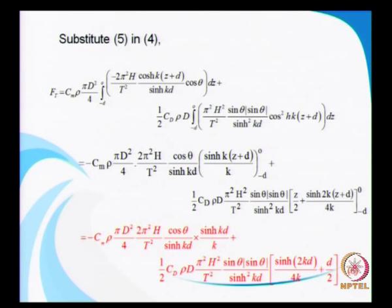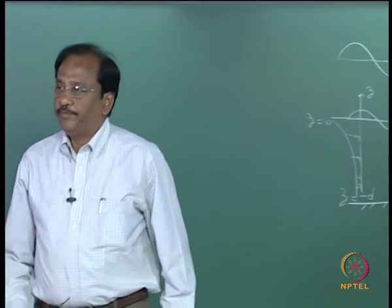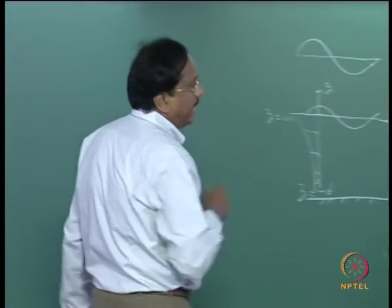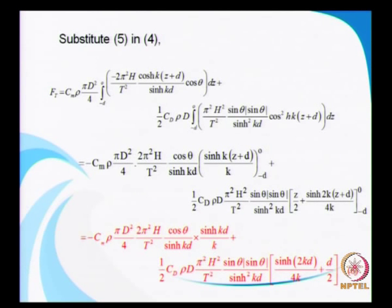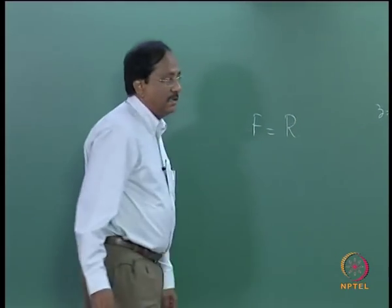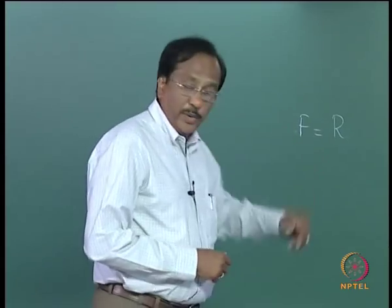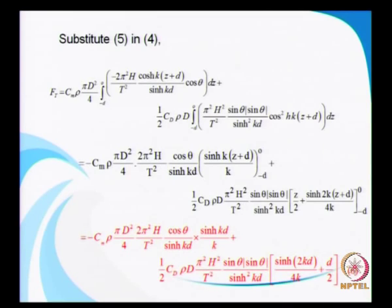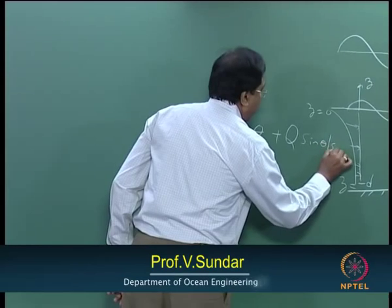You have two kinds of variation. One is with respect to z, and since the oscillation is a wave with respect to time, the force will be varying with respect to time also. Finally, when you carry out the integration, you get some kind of an expression F equal to some constant — which you need to evaluate and which will include your C_D or C_M — then you will have cos theta for the inertial term.